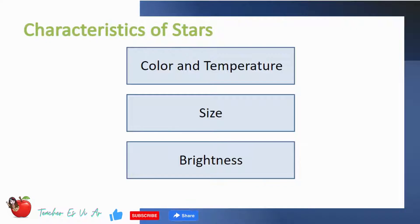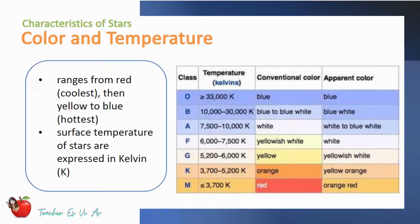Let's discuss first the color and the temperature. The color of the stars ranges from red, then yellow, to blue. Red stars are the coolest, while the bluish-white or the white stars are the hottest. Surface temperature of stars are expressed in kelvin.